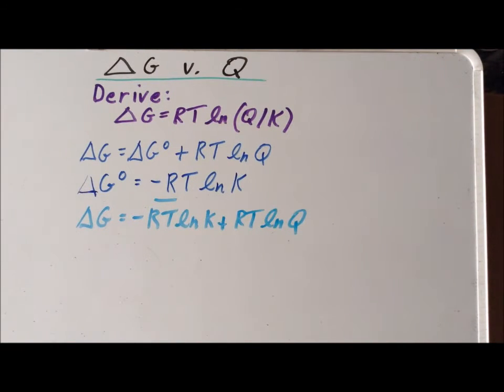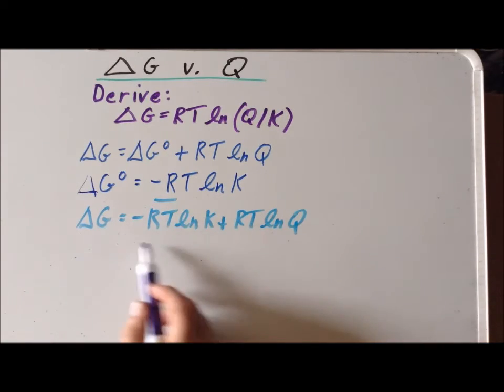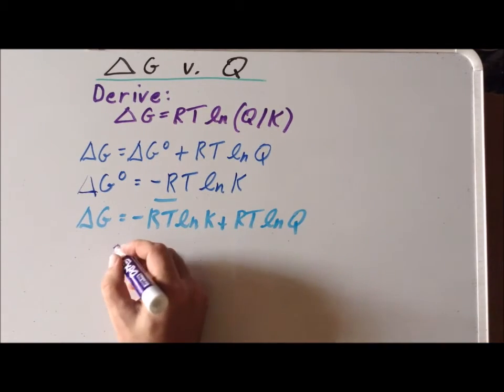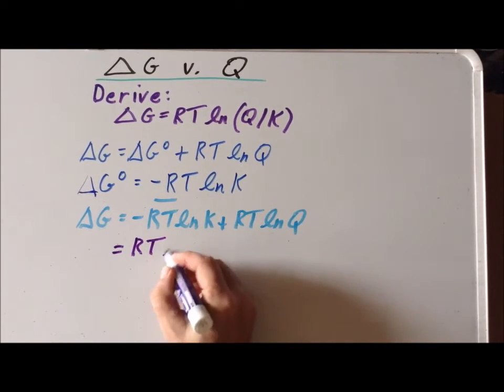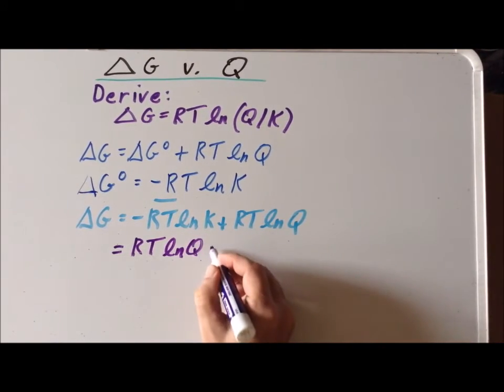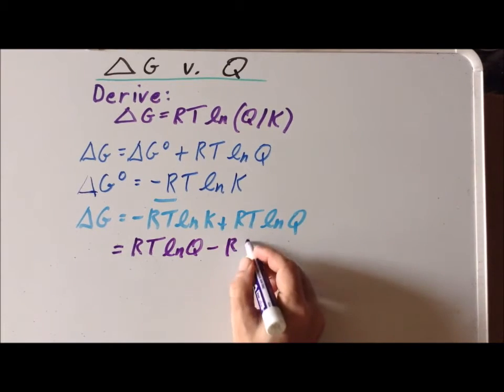Now we simply rearrange this expression, the equation to put the RT natural log of Q first, and then the minus RT second, and that gives us RT natural log of Q minus RT times the natural log of K.